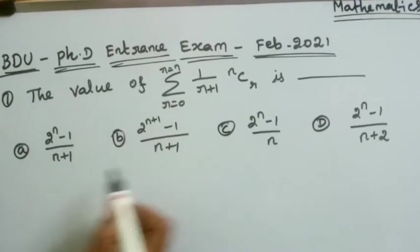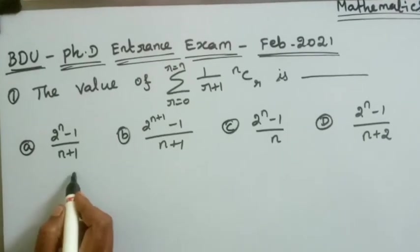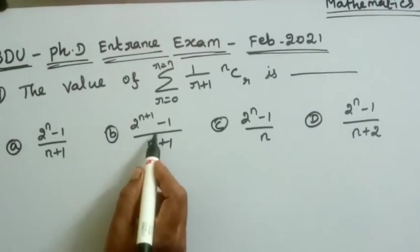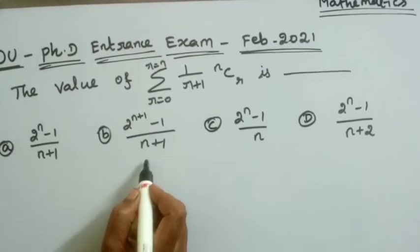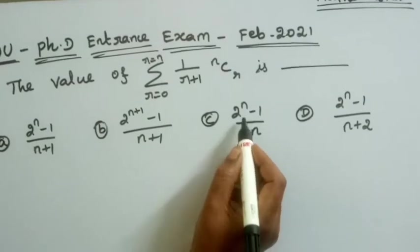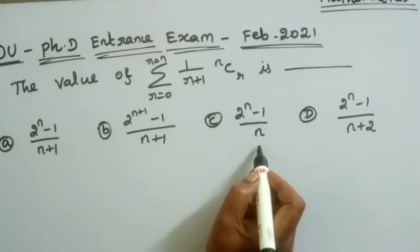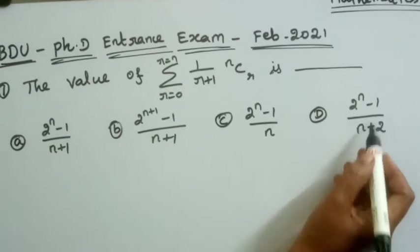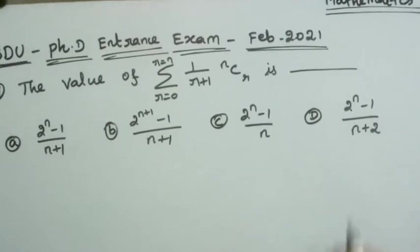The first option is 2 to the power N minus 1 divided by N plus 1. The second option is 2 to the power N minus 1 divided by N plus 1. The third option is 2 to the power N minus 1 divided by N, and the last option is 2 to the power N minus 1 divided by N plus 2.